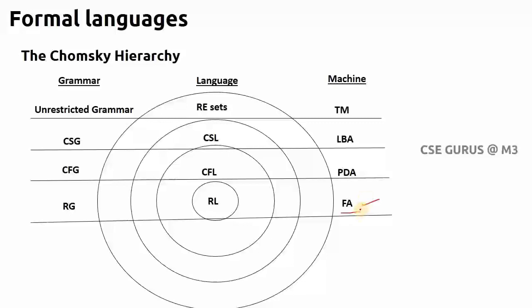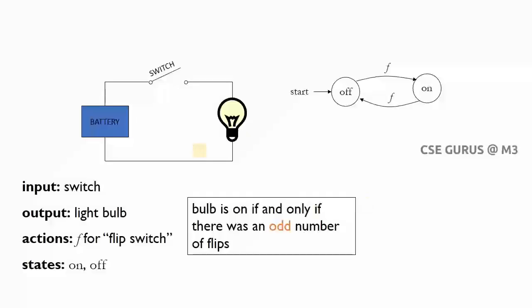We'll see what this abstract device is, how it will work, and the tuple notation — everything we'll see here. To understand this concept easily, I've taken an example of a battery circuit: when the switch is on, the bulb will be in on mode. The input is the switch, output is the light bulb, and actions are flip or open. States are on mode and off mode.